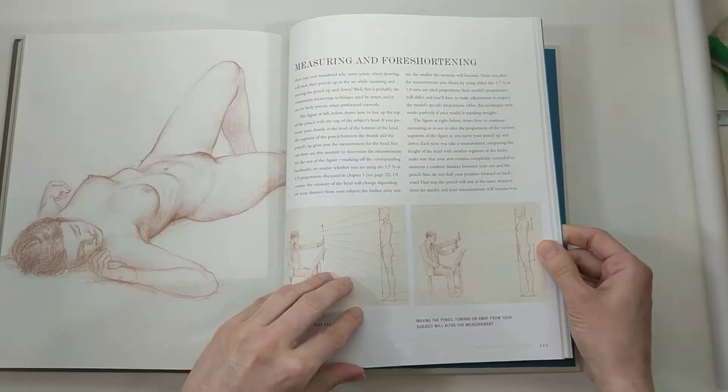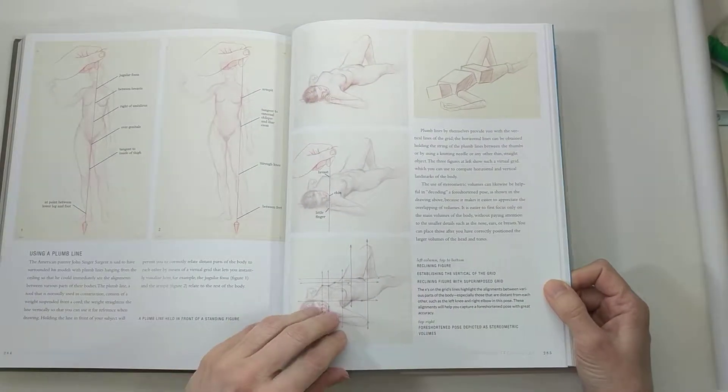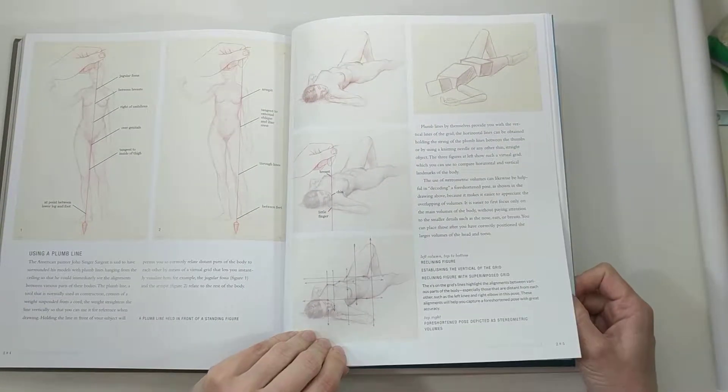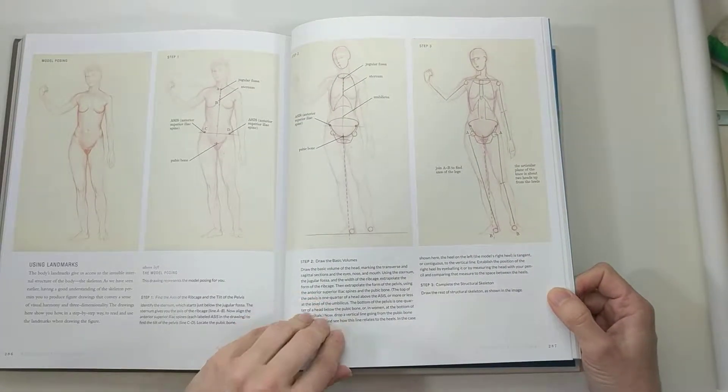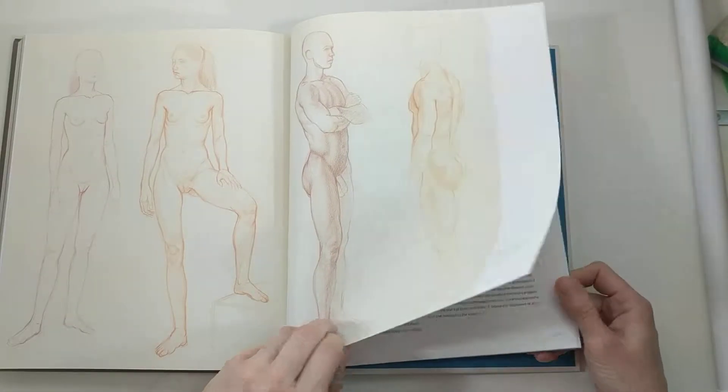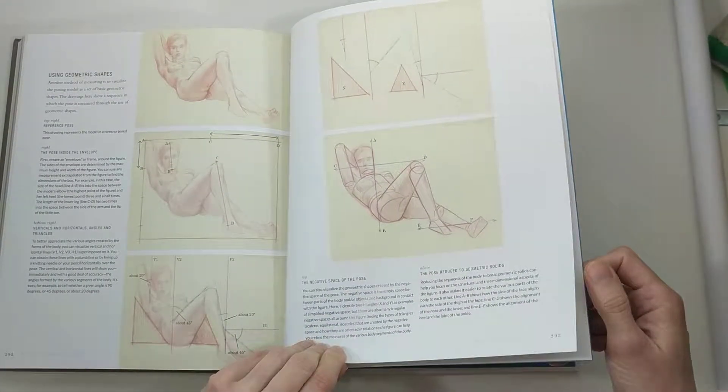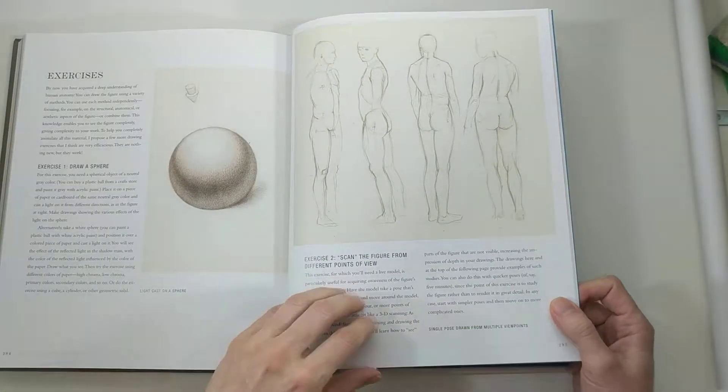And then there's a really interesting section on measuring and foreshortening. Foreshortening is something that I've always found a little challenging, and he has a nice section on how to see the form and how to measure in different positions.